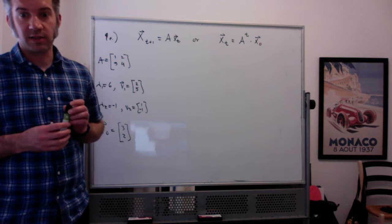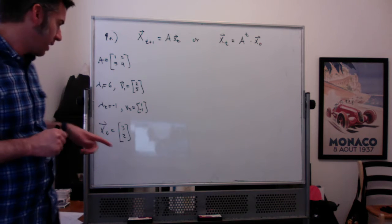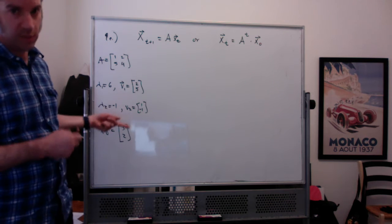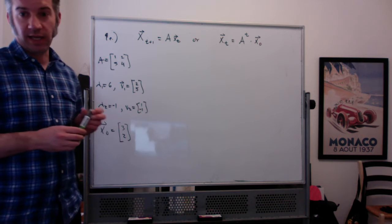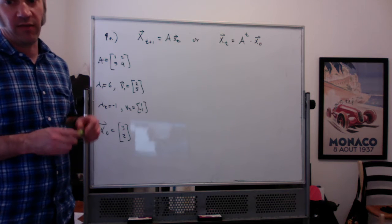All right, problem 9e asks: if the initial condition is x naught is 3, 2, meaning there's three juveniles and two adults, express x sub t equal to a to the t times x naught in terms of eigenvectors and eigenvalues.